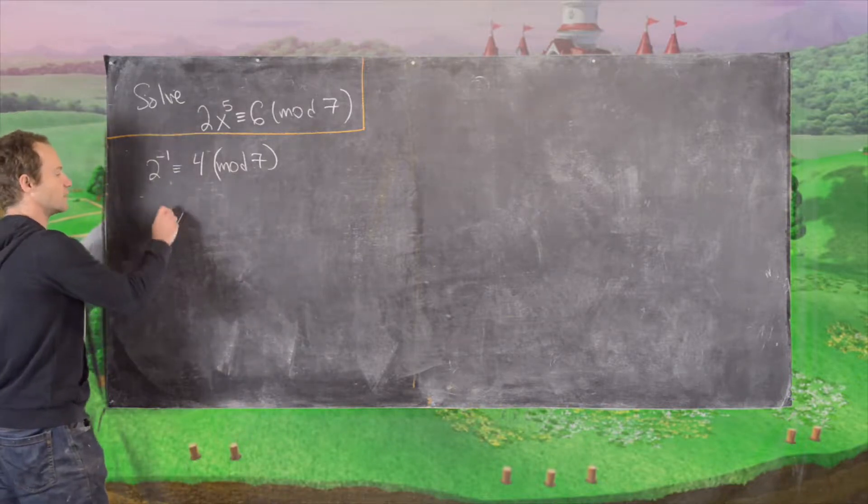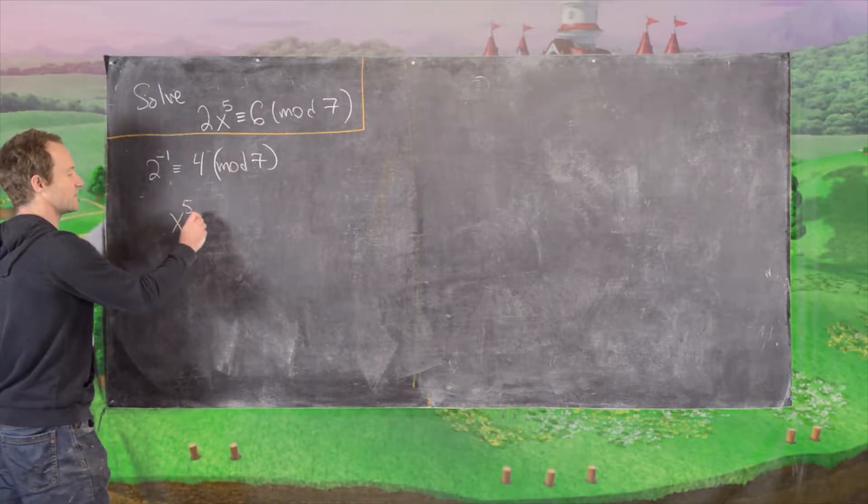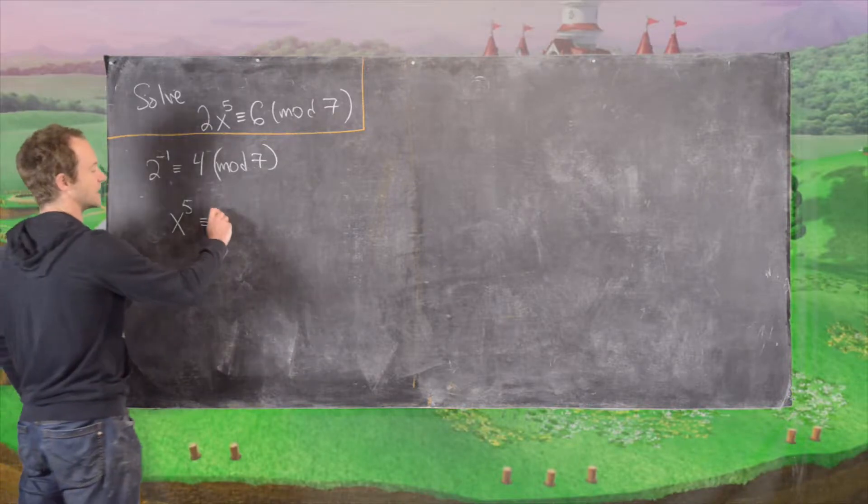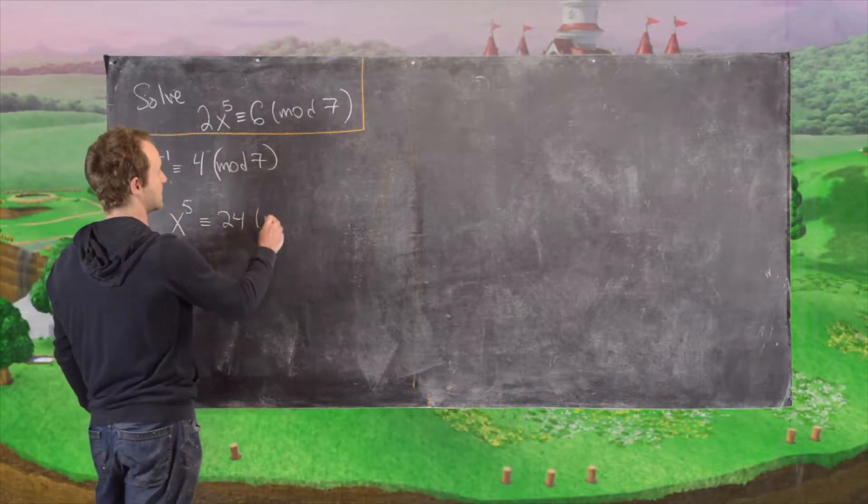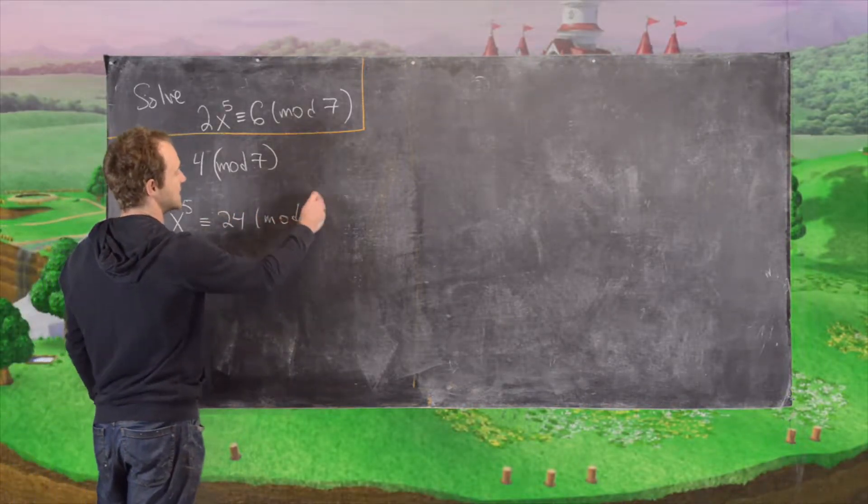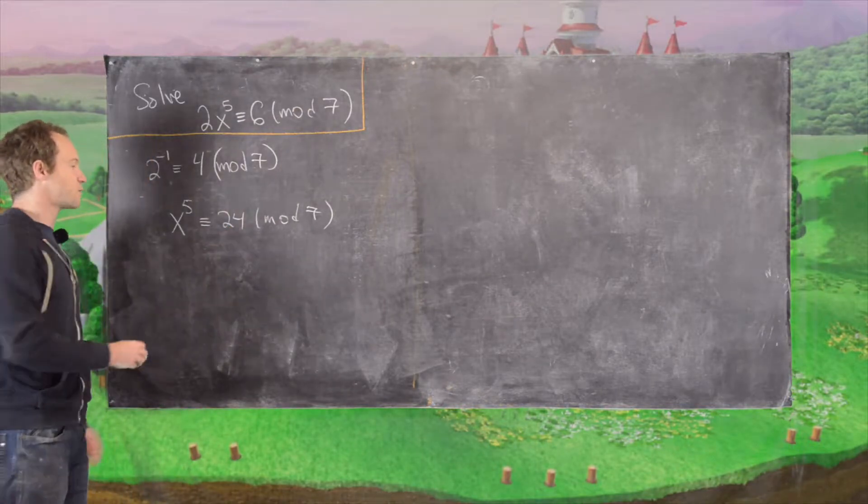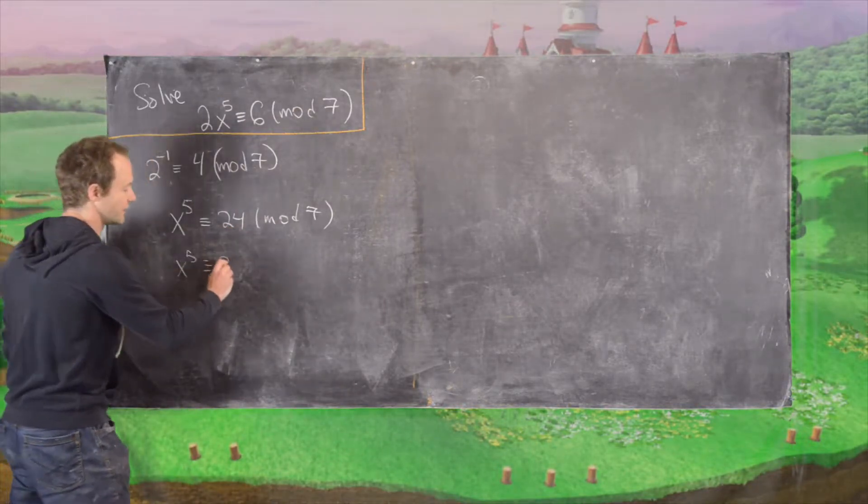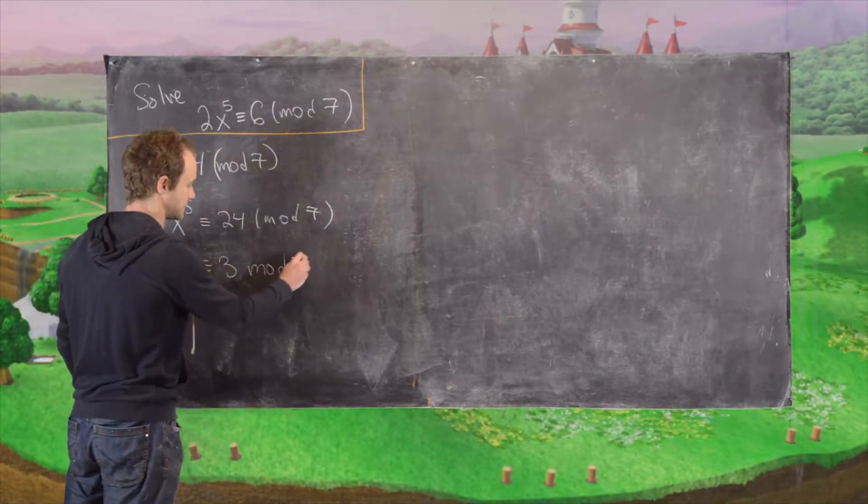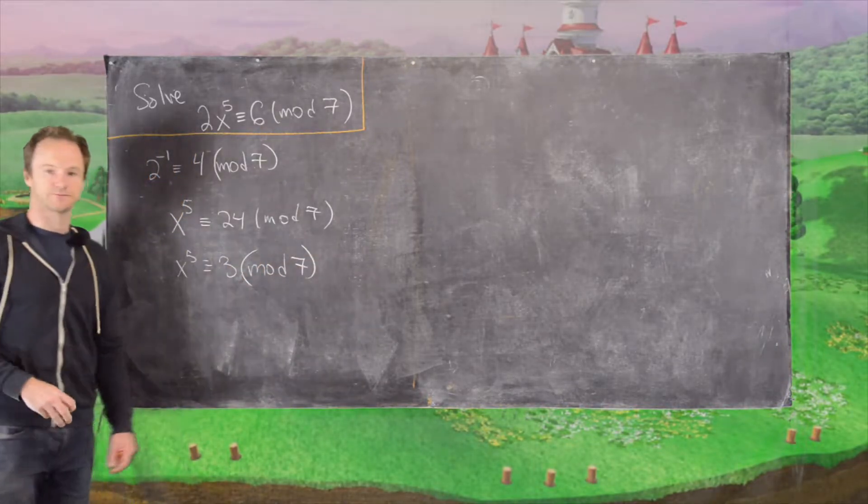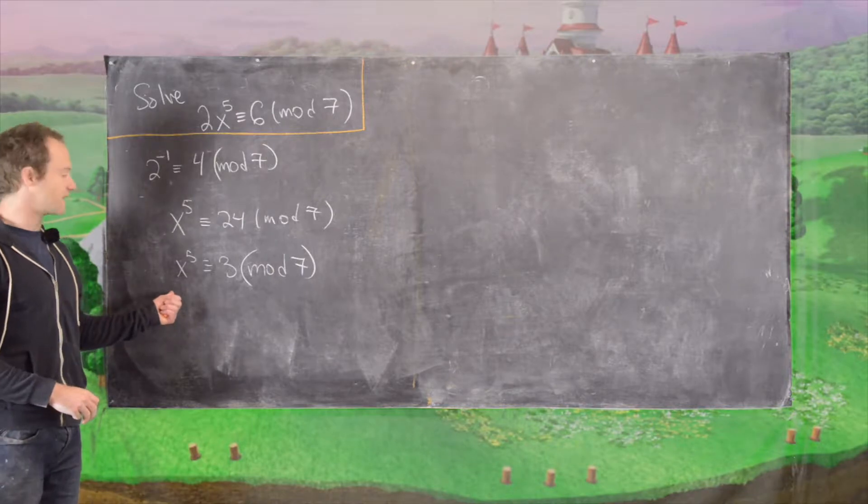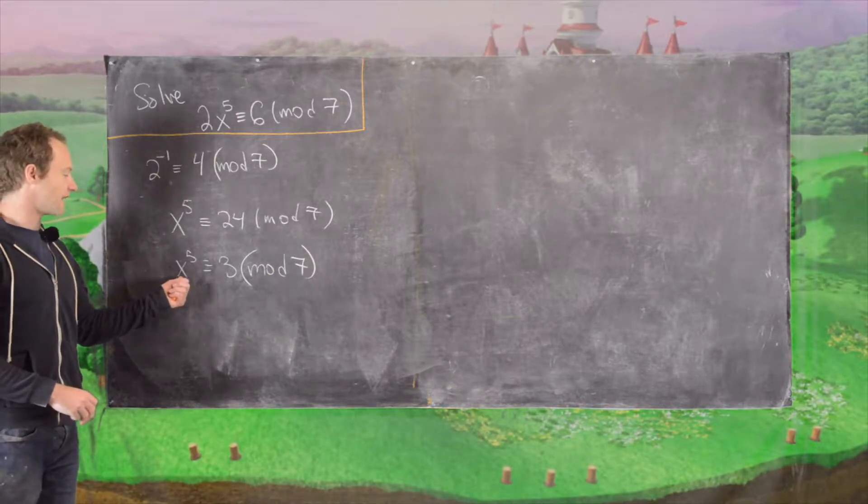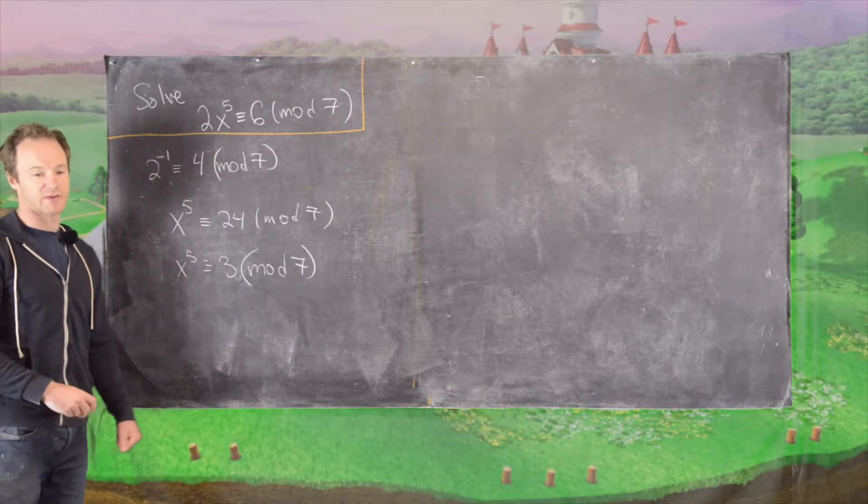On the left hand side, we'll get x to the 5th. And then on the right hand side, we'll get 24 mod 7. But then again, we can reduce this 24 mod 7 to x to the 5th is congruent to 3 mod 7. So now we've broken it down to the fact that we need to solve x to the 5th is congruent to 3 mod 7.